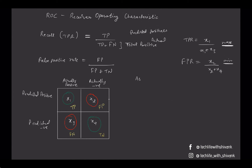As we increase the threshold — that is f(x), which is sigmoid of w-transpose x — if it is greater than or equal to t we predict a positive class, and if less than t we predict a negative class. As we increase threshold t, we predict more items into the negative class and fewer into the positive class. So false positives decrease and true positives also decrease. But we should choose t such that the decrease in false positives is much higher than the decrease in true positives.